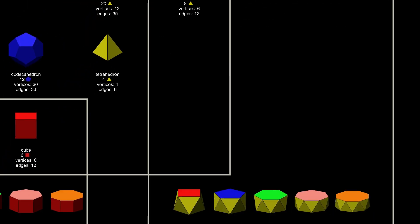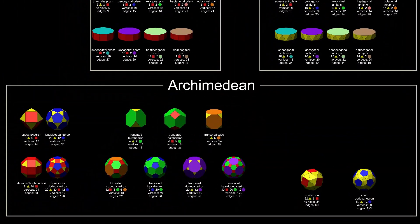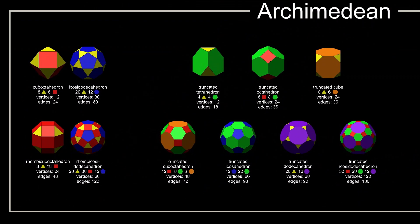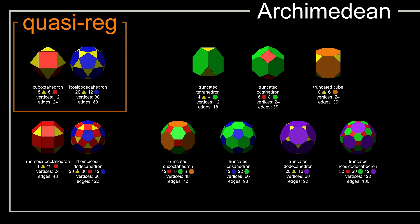Then we have the Archimedean solids, the 13 semi-regular shapes that don't fit into the other families. Two of them, the cuboctahedron and the icosidodecahedron, are quasi-regular. These have alternating face types around each vertex, so all edges are identical.